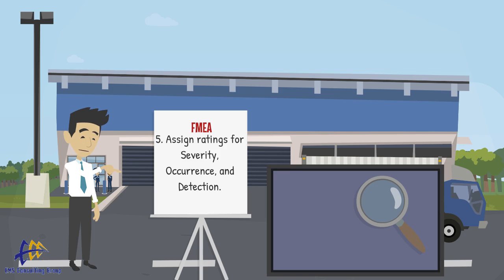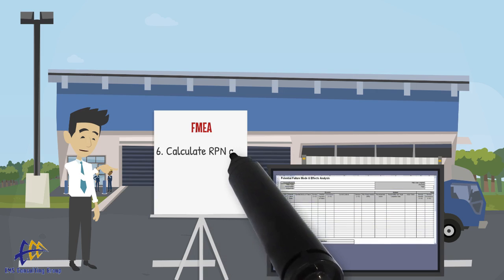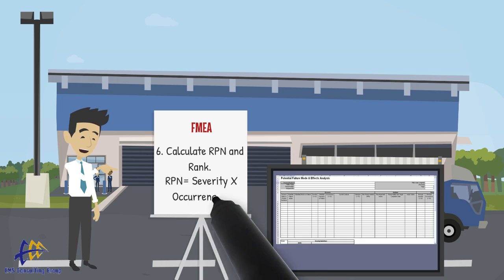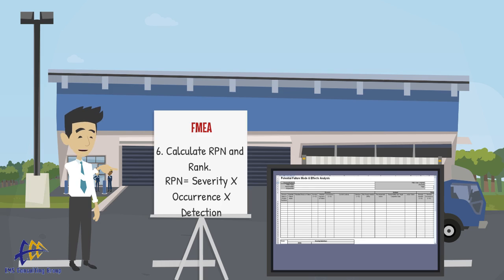After the ratings are complete, we rank by RPN — risk priority number — from greatest to least. RPN is simply the product of severity, occurrence, and detection. In other words, we multiply them.